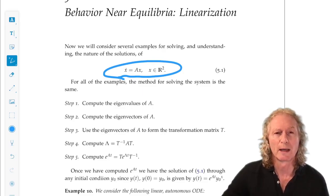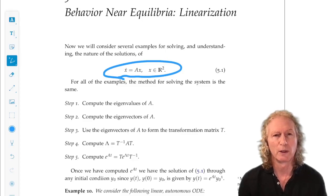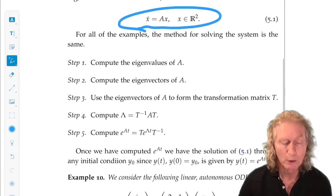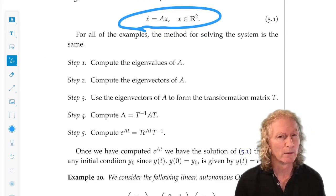You're going to need to look back at the appendix, appendix A, and revise how you compute eigenvalues and eigenvectors of two-by-two matrices, as well as the inverse. So remember we have these five steps. We compute the eigenvalues of A. We compute the eigenvectors of A, once we have the eigenvalues.